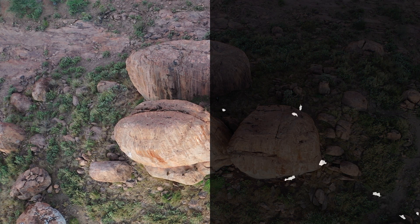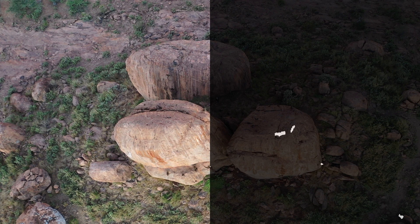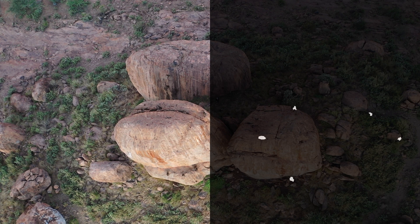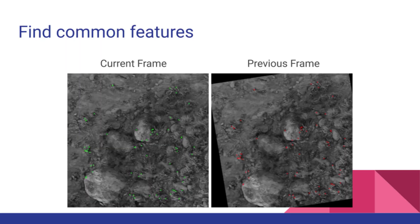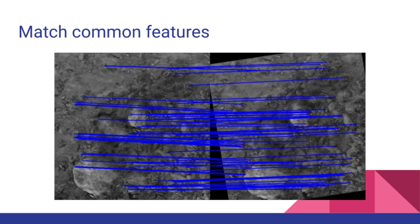To process the drone footage, first movement of the camera is corrected for, ensuring that all the previous or historical frames share the same origin. This process begins with looking for common features between the current frame and the historical frames. Using the common features, a transformation is then calculated and applied to the historical frames, generating adjusted historical frames which now share origins with the current frame.